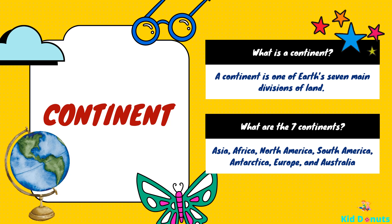Ordered from largest in area to smallest, these seven regions are Asia, Africa, North America, South America, Antarctica, Europe, and Australia.